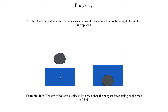The force acting on the rock is the same as the weight of fluid the rock has displaced. So if you submerge a rock in water and displace 35 newtons worth of water, the buoyant force acting on the rock is 35 newtons — an upward force of 35 newtons trying to carry the rock out of the water.